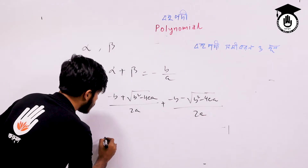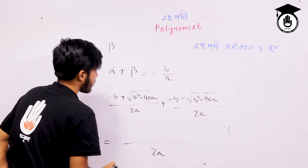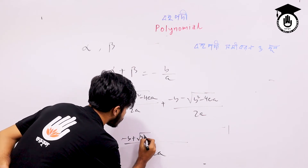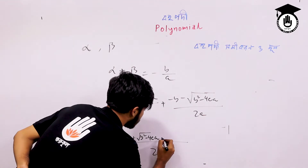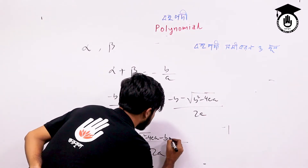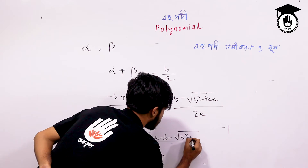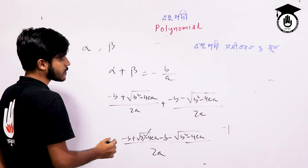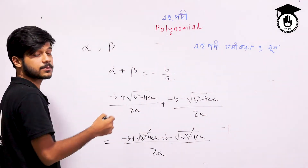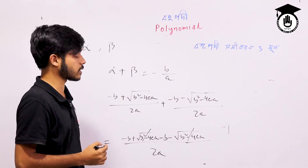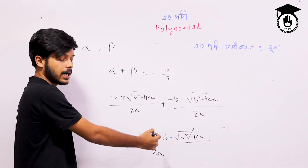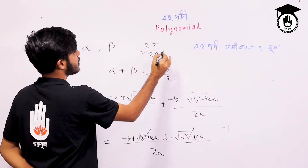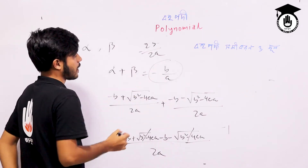And beta equals minus b minus the square root of b squared minus 4ac, divided by 2a. If you want to know this, note that 2a equals 2a. So: minus b plus root(b²−4ac) minus minus b minus root(b²−4ac), which gives the difference of the roots.